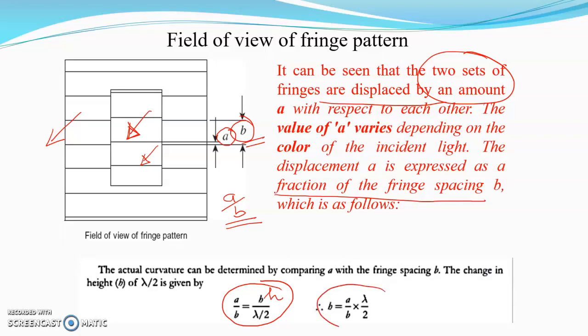The difference in height h experienced over the top of the workpiece, or the taper, can be measured using h = (a/b) × (λ/2), where λ is the wavelength of the selected light.